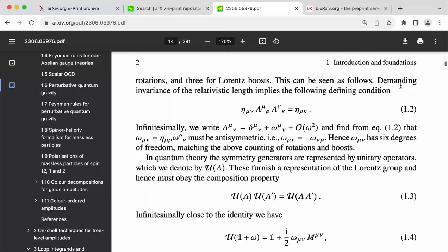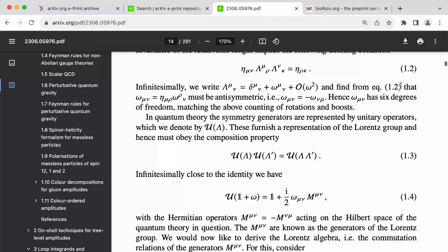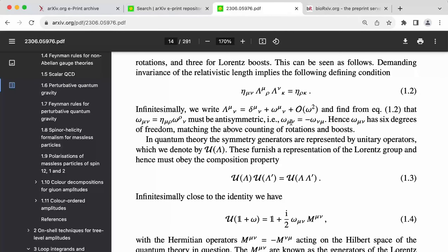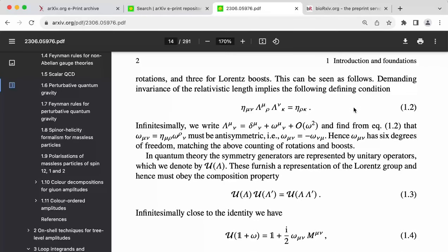And what will happen is that in any such paper, generally, there will be many steps which are not explicitly worked out. So for instance, this paper says that demanding invariance of the relativistic length implies the following condition. So this is simply saying that if you transform to a new frame using a Lorentz transformation, the metric should not change.